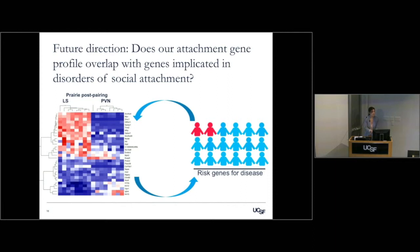We can take these profiles that we know are important in attachment and see if they are also affected in disorders of attachment. And then we can go back to patients who have specific genes highly linked to disease and ask what happens in our vole system if we perturb those genes — how does that affect the network we're generating? This gives us a powerful way to move back and forth between disease and our vole system.